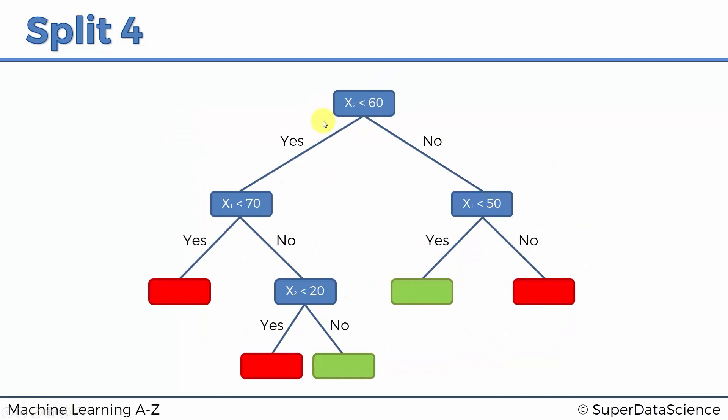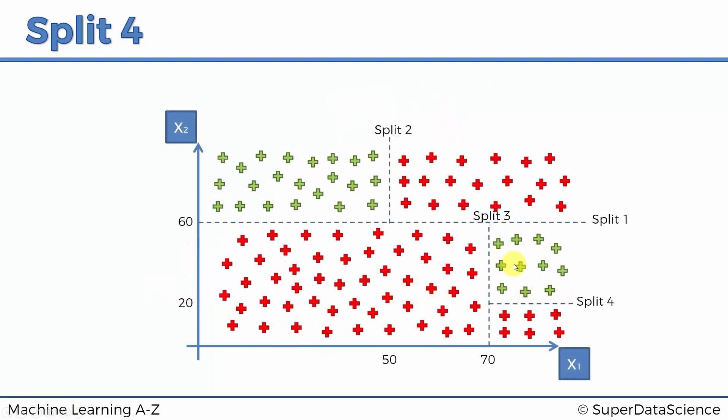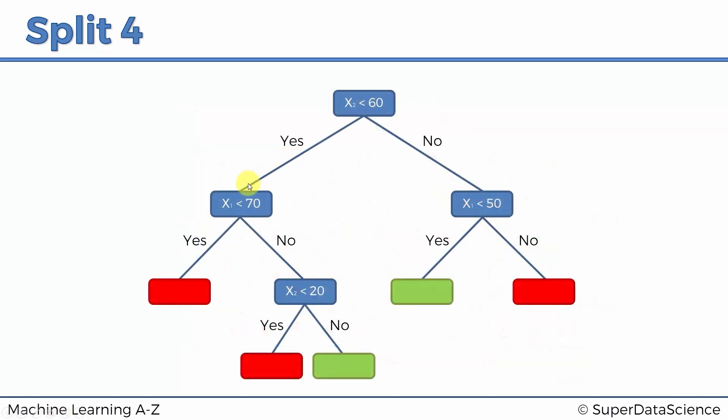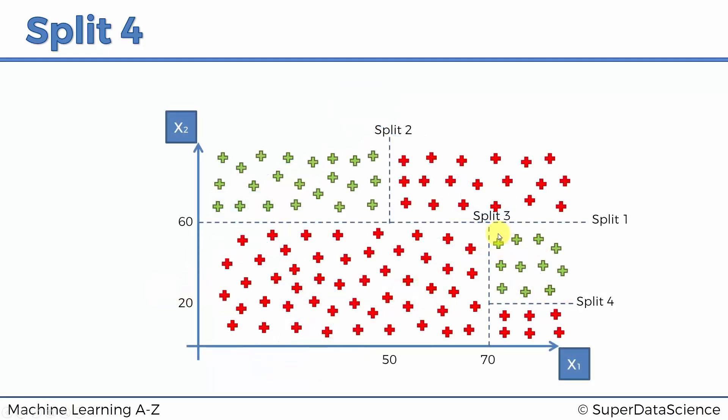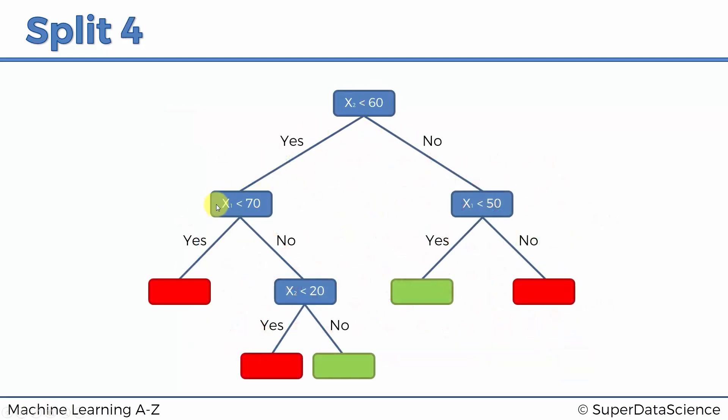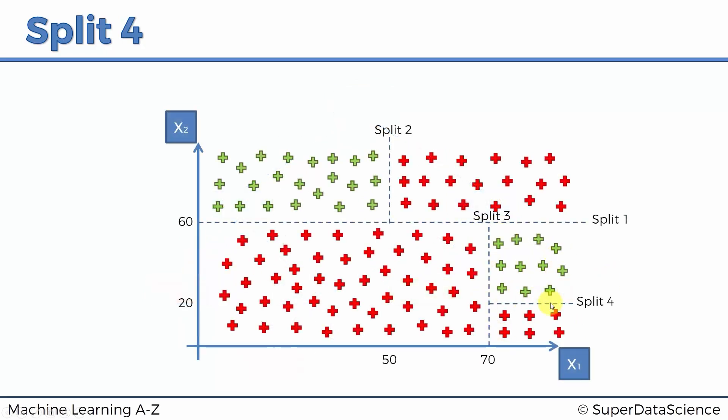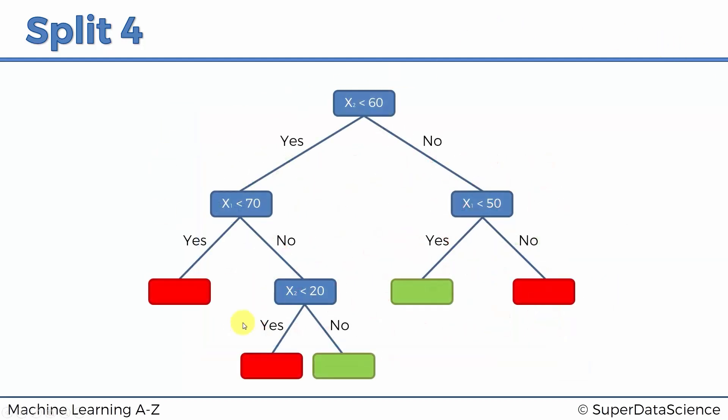But at the same time, even if you don't get to the terminal leaf, because trees can be very, very long, sometimes you might not even get to the bottom. In these boxes that still have a mix, a probabilistic classification occurs. Instead of checking the last condition, we'll just check what is the likelihood of it being green and red. If we leave it at this box, we would automatically say that it's a red dot if we don't go down the decision tree and check more conditions. That's another way of using the decision tree.